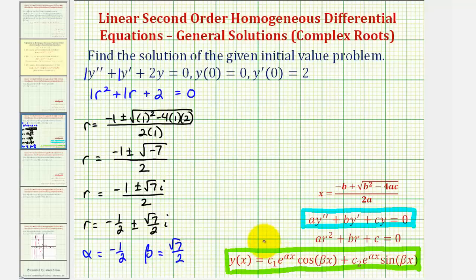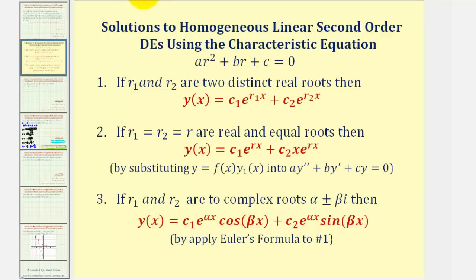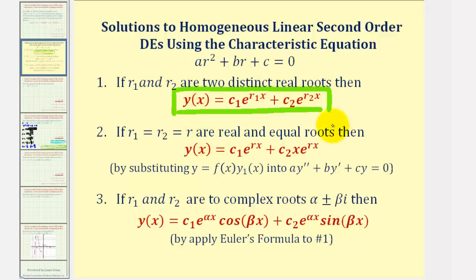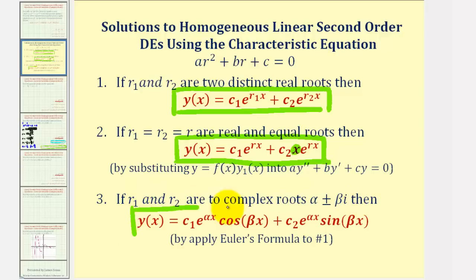Before we make this substitution, let's do a quick review. If the characteristic equation has two distinct real roots, this is the form of the general solution. If it has two real but equal roots, this is the form — notice the extra factor of x. And in our case, since we have complex roots, this is the form of the general solution.